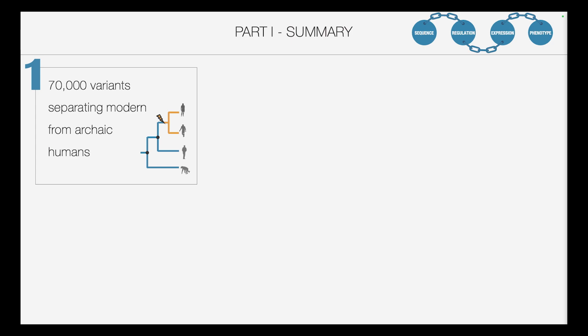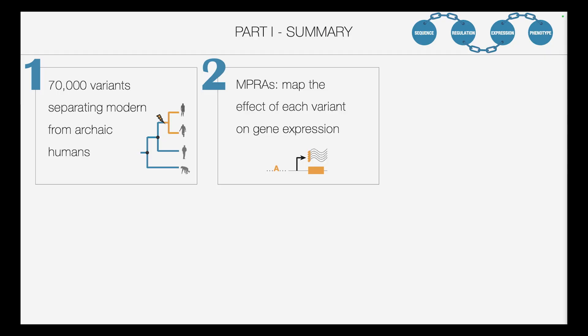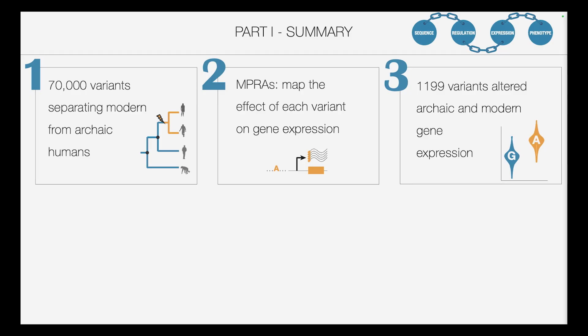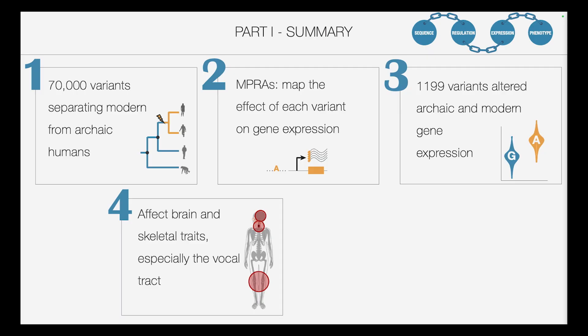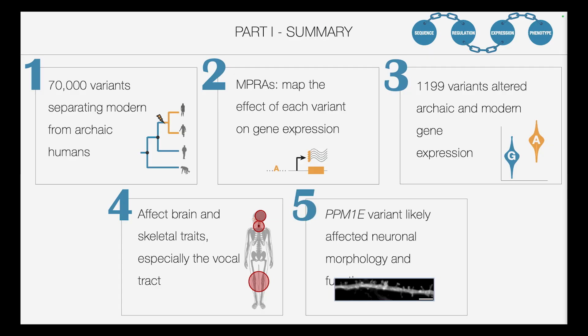To summarize: we took the 70,000 variants that separate modern from archaic humans and used MPRAs to map the effect of each variant on gene expression. We find around 1,200 variants that significantly altered archaic and modern gene expression. These tend to affect the brain, some skeletal traits, and especially the vocal tract. We also find a specific variant within PPM1E that likely affected neuronal morphology and function.